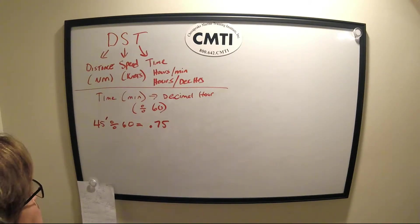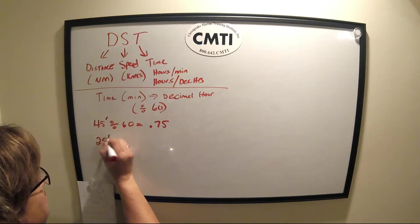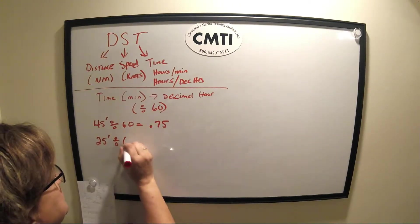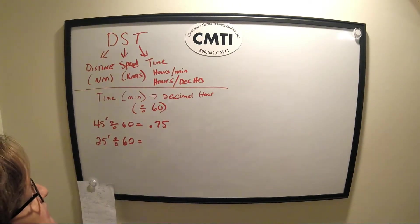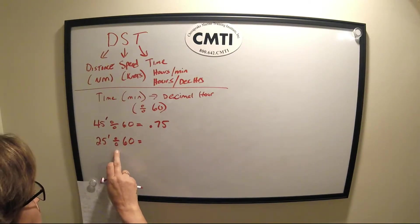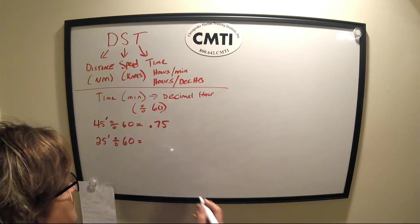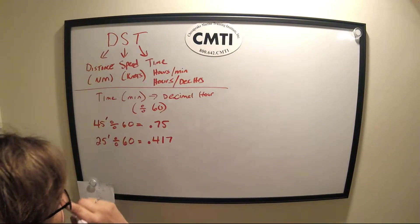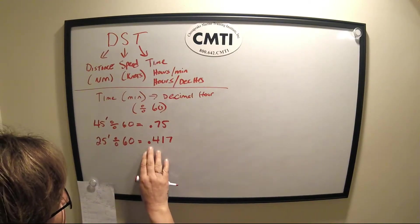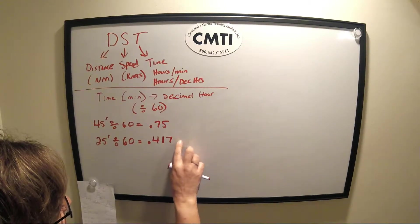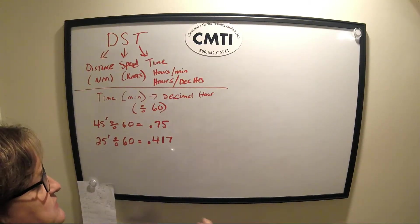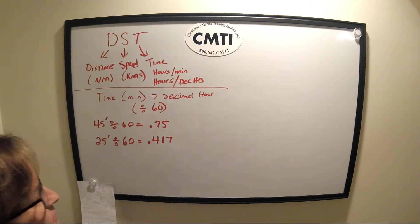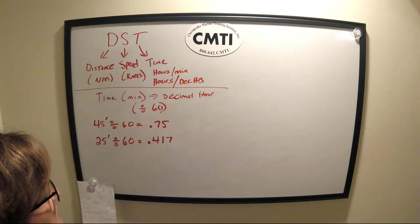Let's say we have 25 minutes — 25 divided by 60 gives us a decimal. It's always good to round to three decimal places, so in this case we get .417. Look at the next digit to see if it's 5 or above to decide whether to round up or leave it. Next, 36 minutes divided by 60 gives us .6 even, because 36 is exactly 0.6 of an hour.